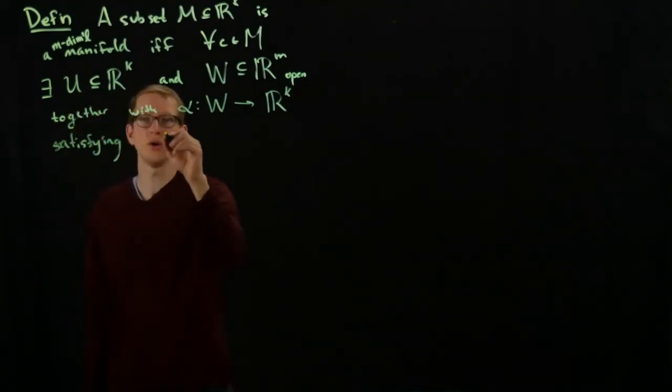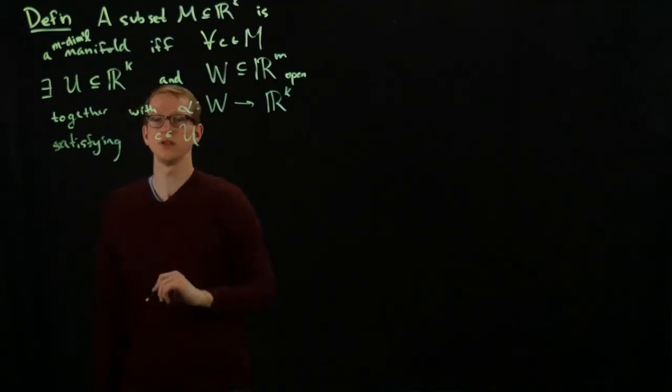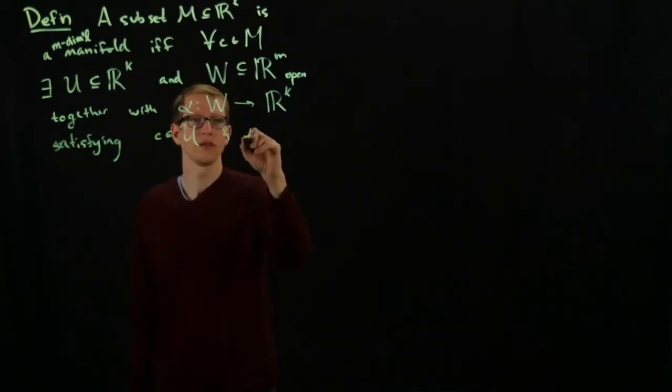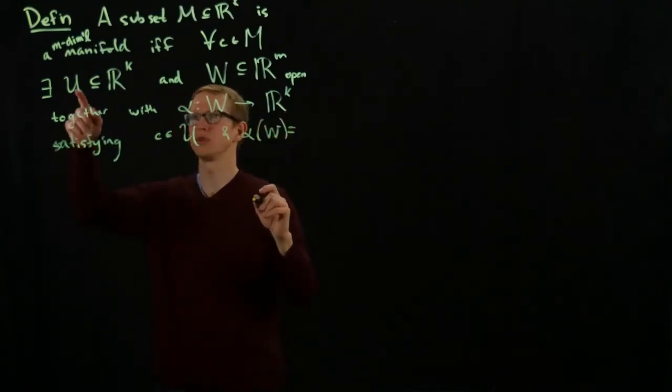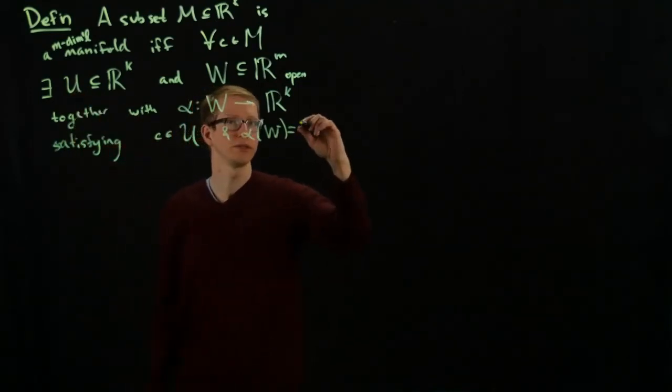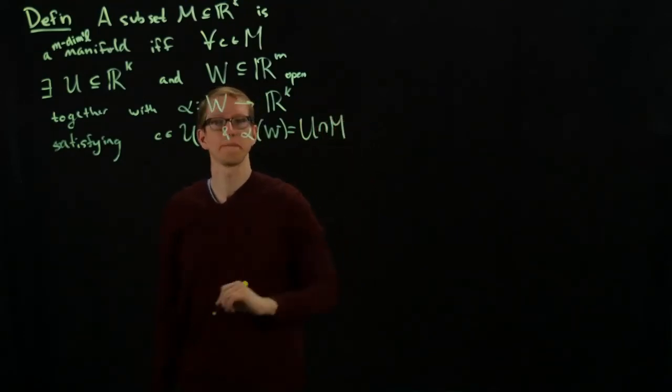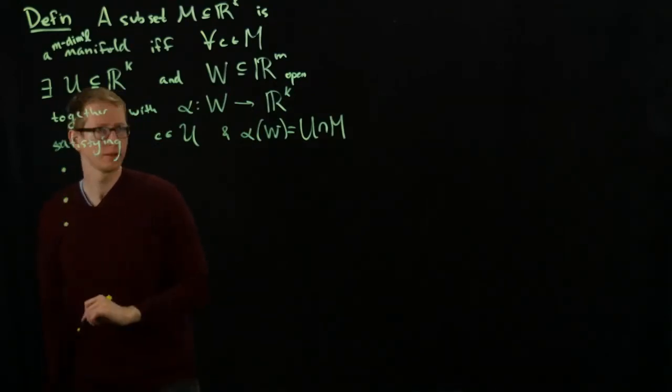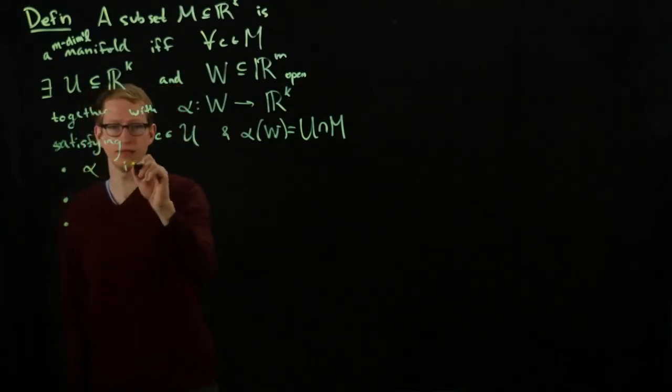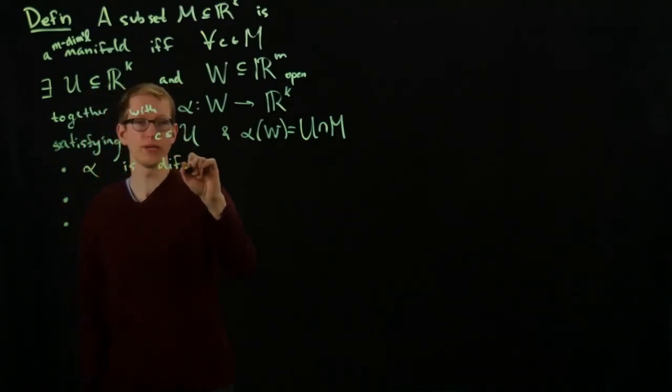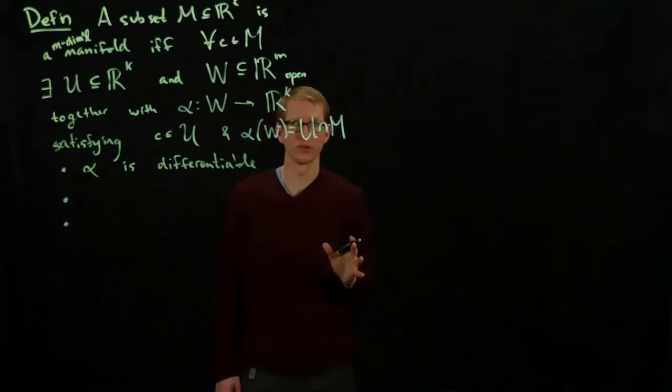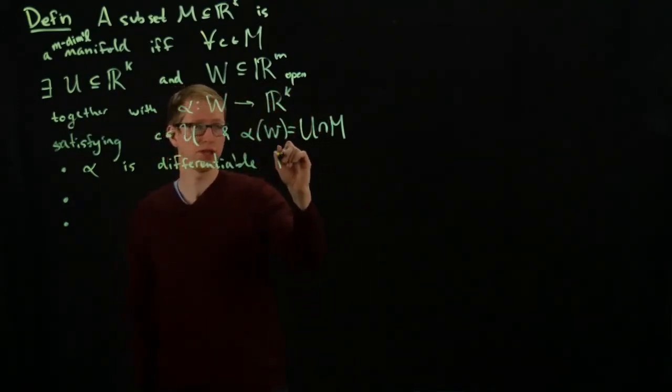First of all, U has to be an open neighborhood of C. So C is in U, and we also ask that alpha of W actually equals U intersected with the manifold M. And also the following three very important conditions. First, alpha is differentiable, or we can replace differentiable by what I mean - of class C^R, for instance - is differentiable and one-to-one.